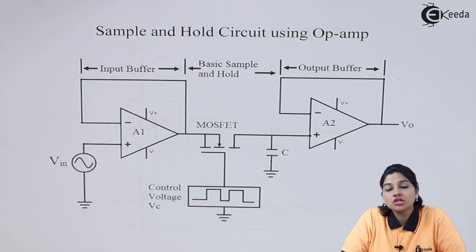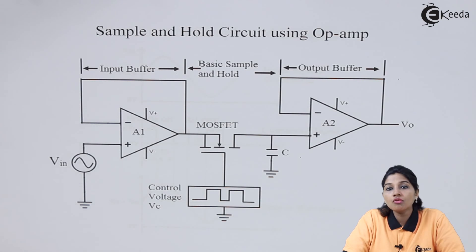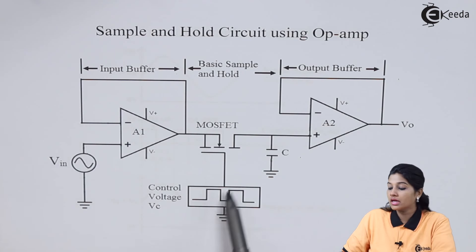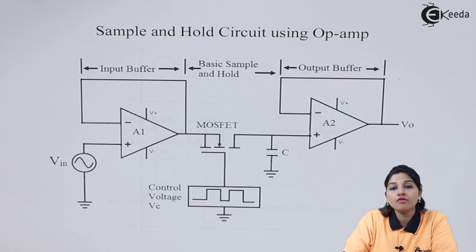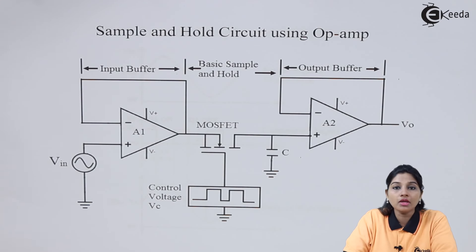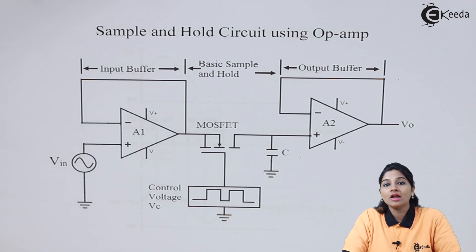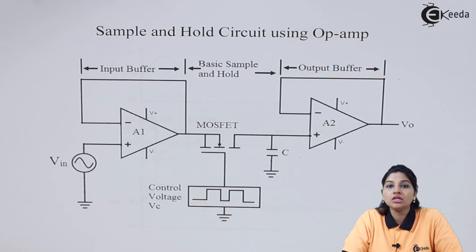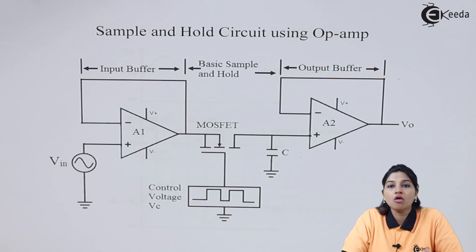The N-channel MOSFET is used as a switch, and the control voltage Vc is applied to the gate terminal of the MOSFET. Therefore, the control voltage Vc controls the opening and closing of the MOSFET. When the gate pulse is applied, the MOSFET turns on, and when the gate pulse is not applied, the MOSFET turns off. Depending upon turning on and turning off of the MOSFET, the capacitor either charges or discharges.